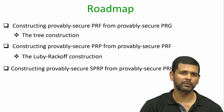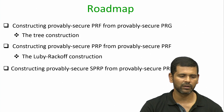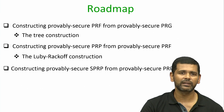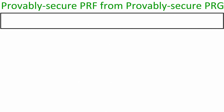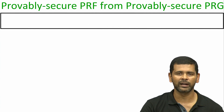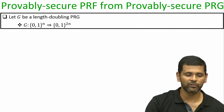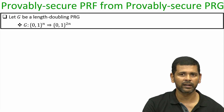Then we will see the construction of provably secure pseudo-random permutations from provably secure pseudo-random functions. We will see how, given a provably secure pseudo-random generator, we construct provably secure pseudo-random permutations. For the purpose of demonstration I am assuming that I have a length-doubling pseudo-random generator.